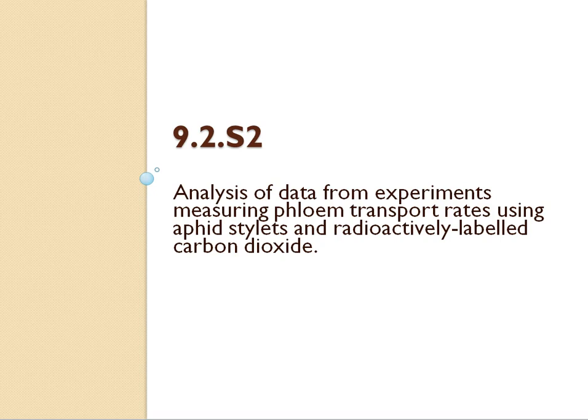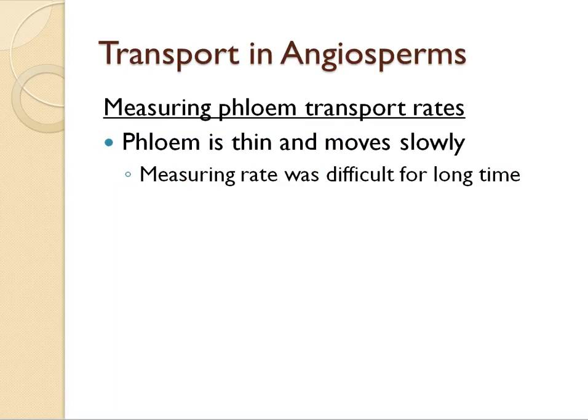For some reason — it's a little random — you need to be able to analyse experiments specifically about phloem transport rates using aphid stylets and radioactively labeled carbon dioxide. Essentially, the phloem is thin and moves slowly, which means that for a very long time when scientists were trying to figure out how long it actually takes sugar to move around the phloem, it was very difficult. It took too long for the measurements to be accurate enough to get real numbers. Somebody eventually noticed that we might be able to have a friend in figuring this out.